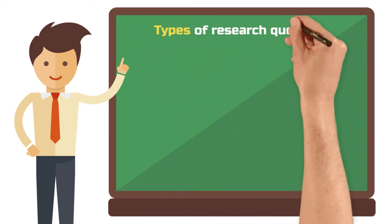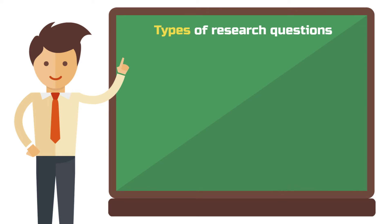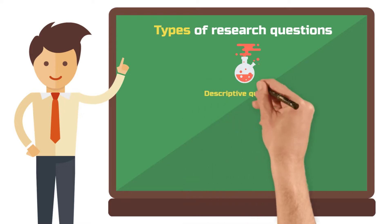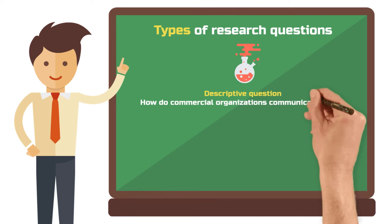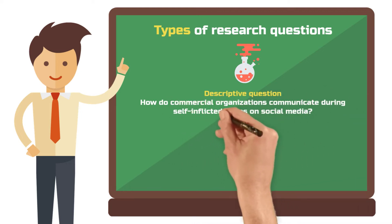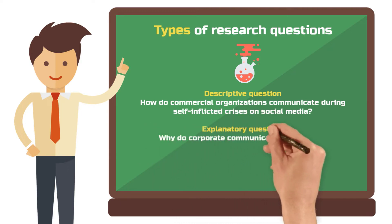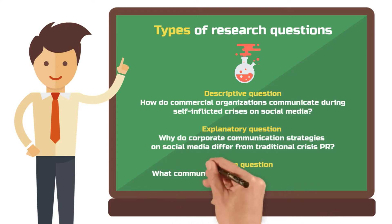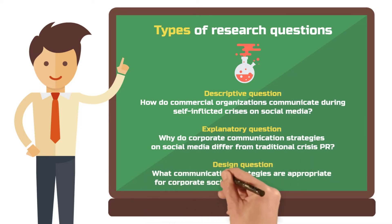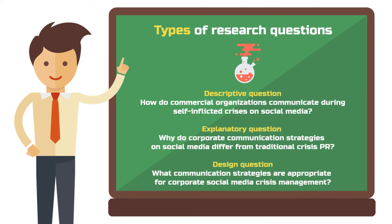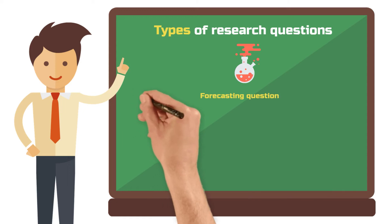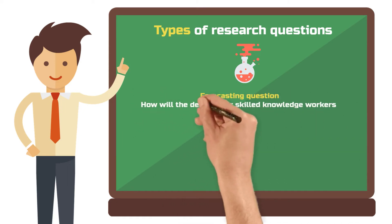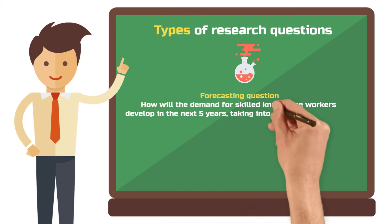The question word you choose also depends on the type of research question. Roughly, the following question types can be distinguished. A descriptive question could be: how do commercial organizations communicate during self-inflicted crises on social media? An explanatory question: why do corporate communication strategies on social media differ from traditional crisis PR? A design question: what communication strategies are appropriate for corporate social media crisis management? This might be especially relevant for practically oriented disciplines such as mechanical engineering, organization science, or computer science. A forecasting question: how will the demand for skilled knowledge workers develop in the next five years, taking into account the developments of industry 4.0?